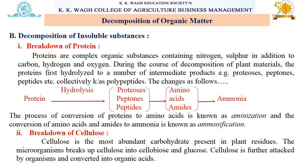Next is the breakdown of cellulose. Cellulose is the most abundant carbohydrate present in plant residues. Different microorganisms break up this cellulose into cellobiose and glucose. This cellulose is further attacked by organisms and converted into different organic acids.